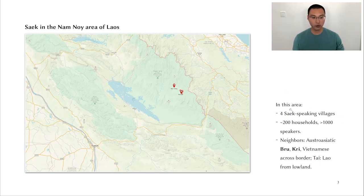In Laos there are currently two main areas of Saek residents. One of them is known as the Nam Noi area which is shown on the map here. In this area there are four Saek speaking villages shown on the map. Altogether there are about 200 households with above 1,000 speakers. The Saek villages in this area are surrounded by also Asiatic groups, the Bru, the Kree, and to a lesser extent the Vietnamese on the other side and of course Lao from the Lowland.